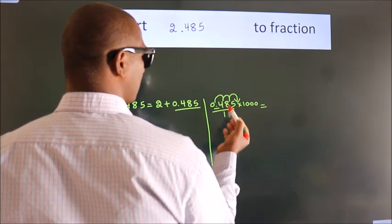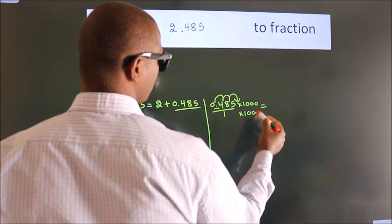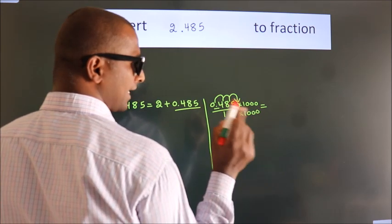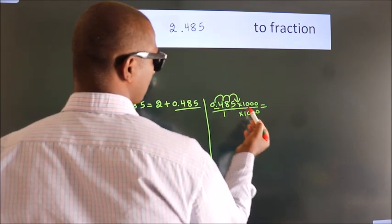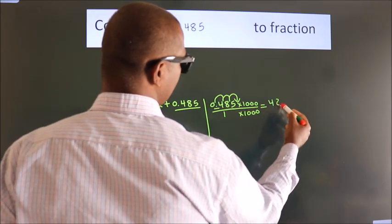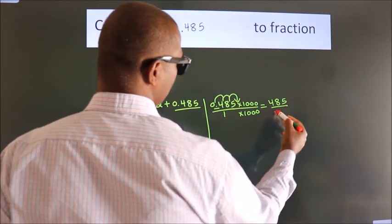Whatever number you are multiplying in the numerator, in the denominator also do the same. Next, 0.485 times 1000 equals 485. 1 times 1000 equals 1000.